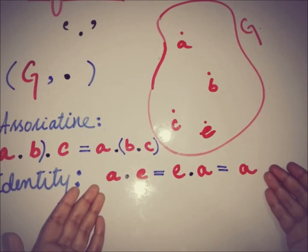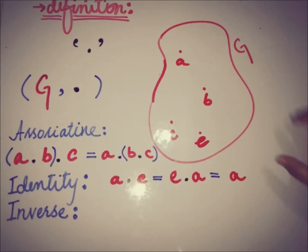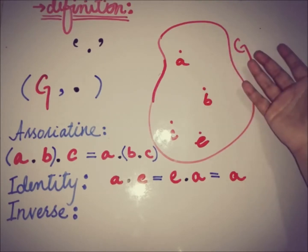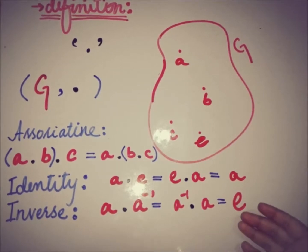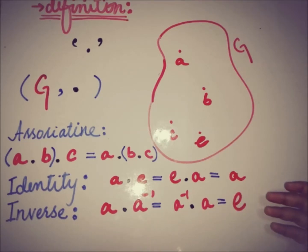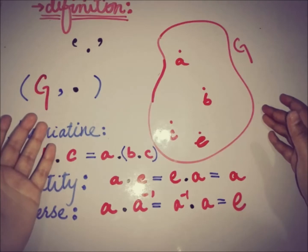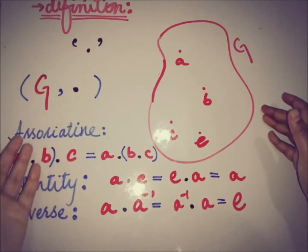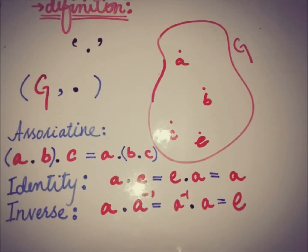The third axiom is about the inverse of elements. If there is an element a in G, then by this axiom there must be an element a-inverse such that a·a⁻¹ = a⁻¹·a = E, the identity. If this equality holds for all elements of G, the third axiom is satisfied. So G is said to be a group under this algebraic operation if it is associative, if there is an identity, and if there is an inverse for every element of G.